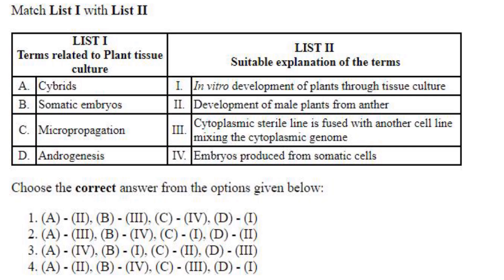Matching terms in plant tissue culture with their explanations: Cybrids (A3) — cytoplasmic sterile lines fused with another cell line, mixing the cytoplasmic genome; somatic embryos (B4) — embryos produced from somatic cells; micropropagation (C1) — in vitro development of plants through tissue culture; androgenesis (D2) — development of male plants from anther. Answer: A3, B4, C1, D2.